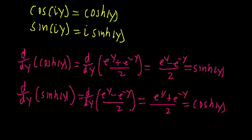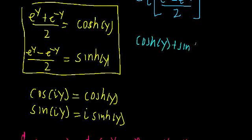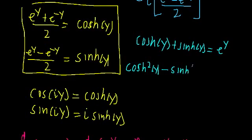We can also talk about two other cool properties. Using the definitions, if we add cosh of y and sinh of y together, we're just left with e to the y. And if we compute hyperbolic cosine squared minus hyperbolic sine squared, that equals 1 — analogous to the identity cosine squared theta plus sine squared theta equals 1. It's an interesting bridge between real exponentials and a mimic of sinusoids.